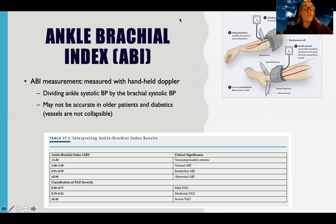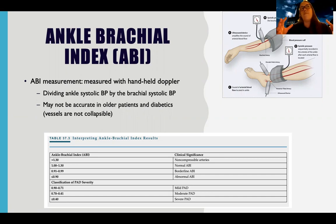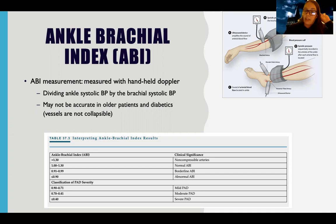There's also the ABI — ankle-brachial index — done with a handheld Doppler. We take the systolic blood pressure at the brachial artery and at the ankle, then divide them to see the ratio. This compares an area with good flow to the ankle, and any significant difference tells us how severe the PAD is. Knowing mild, moderate, or severe ranges is helpful clinically.